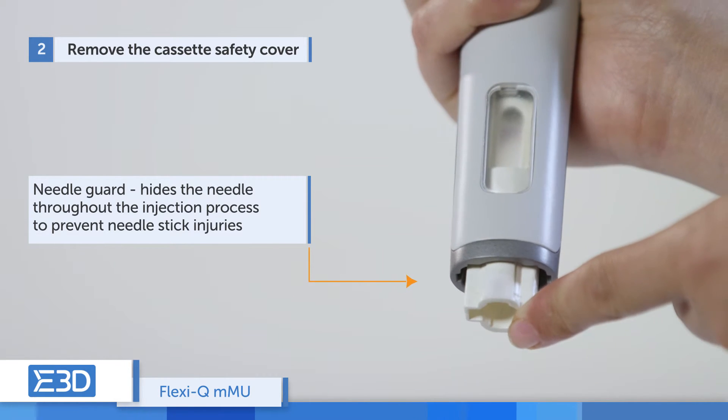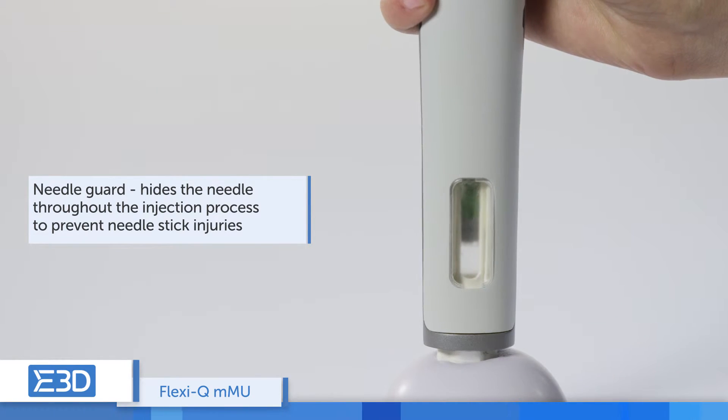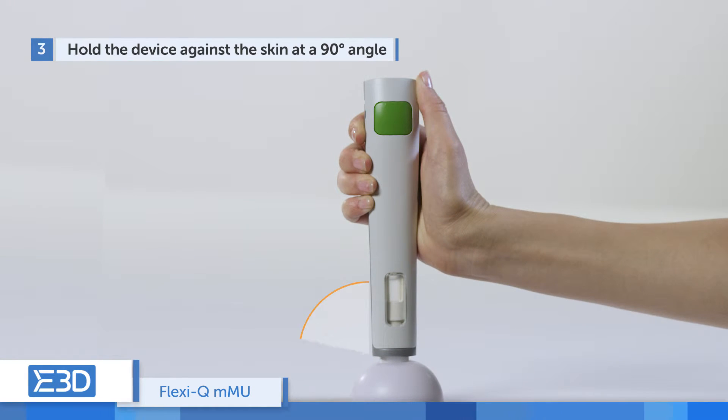The needle guard hides the needle throughout the entire injection process and prevents needle stick injuries. Hold the device against the skin at a 90-degree angle.